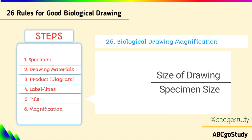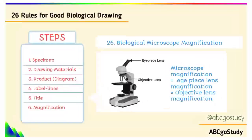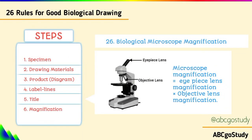You can express magnification as times four or times five, and with this you save time when time is running out. Magnification is very important — there is no biological drawing without magnification. Number twenty-six, microscope magnification: if dealing with a microscope, the magnification is the eyepiece length multiplied by the objective length.